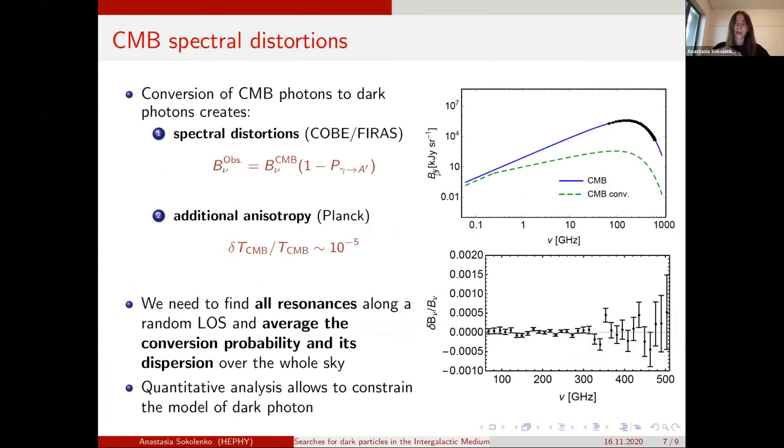When COBE measured to a very high precision that our CMB spectrum is black body spectrum. And if you take the CMB spectrum, and because of this conversion, what we measured here at Earth will be slightly modified by this factor one minus the probability of conversion.